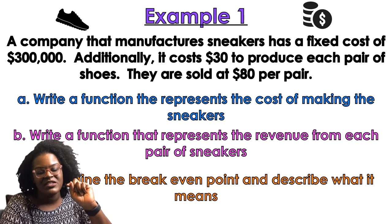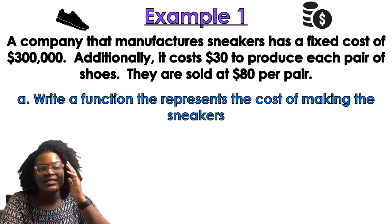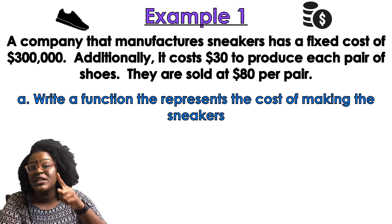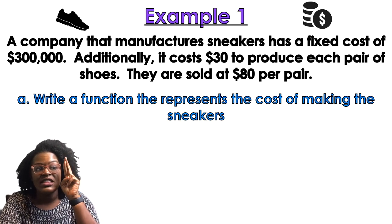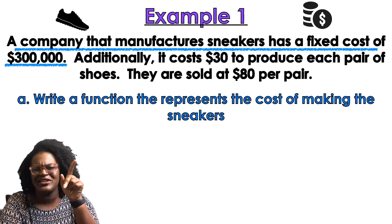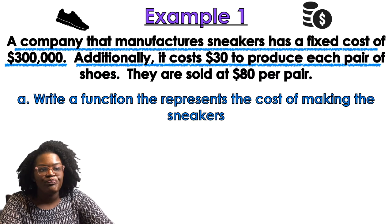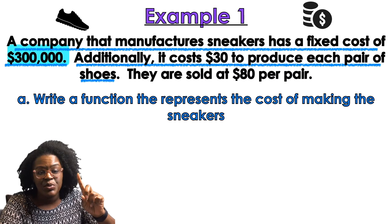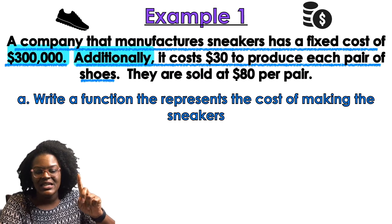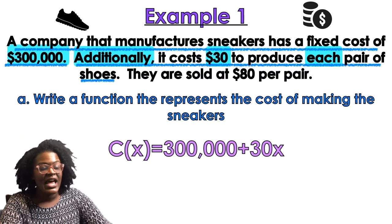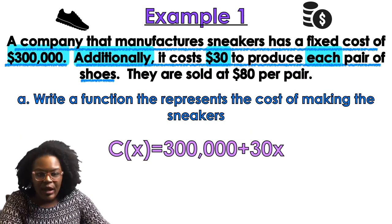We're gonna start with Part A — write a function that represents the cost of making the sneakers. The $300,000 is a fixed cost, so that's a constant. The word 'additionally' tells me I'm going to add, and then $30 per pair — 'each' tells me to multiply, so that's 30x. The cost function is C(x) = 300,000 + 30x. Just that easy.